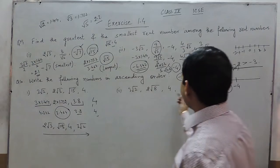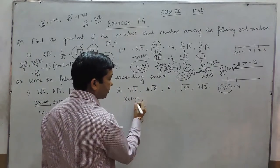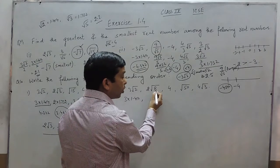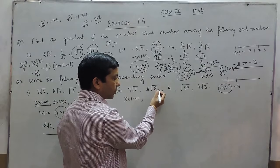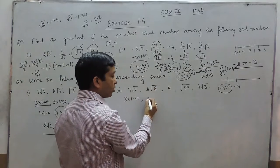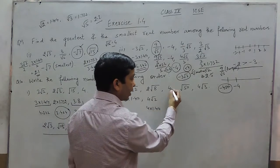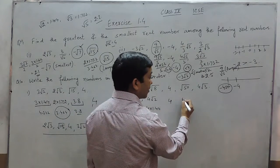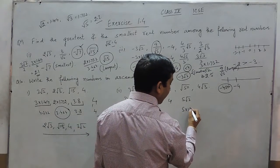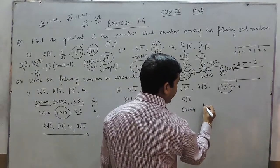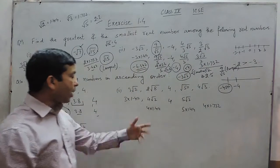For another ascending order problem, we can write π as approximately 3.1414. Root 8 can be written as 2√2, because 8 has three 2s — two 2s can be taken out. So 2√8 becomes 4√2, which is 4 into 1.414. The number 4 is already 4. Then we have 5√2 = 5 into 1.414, and 4√3 = 4 into 1.732.